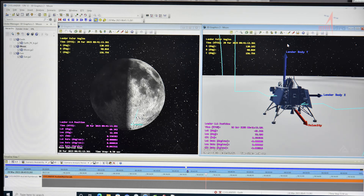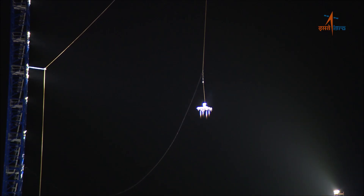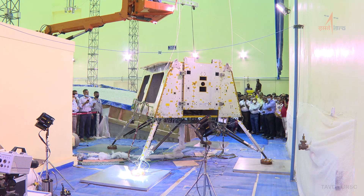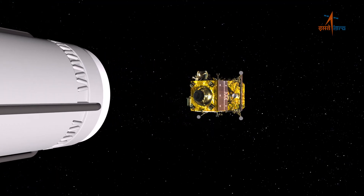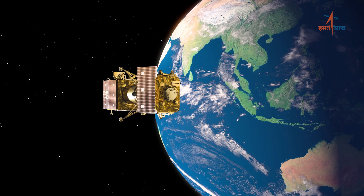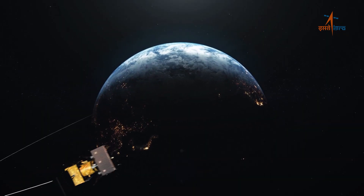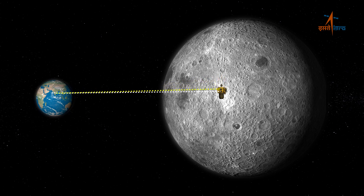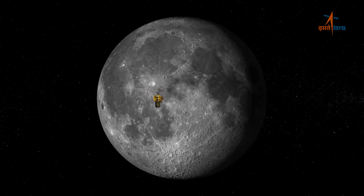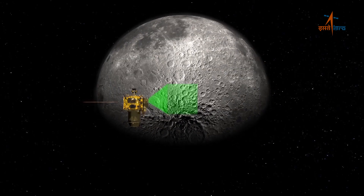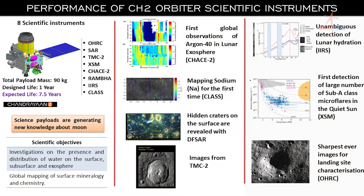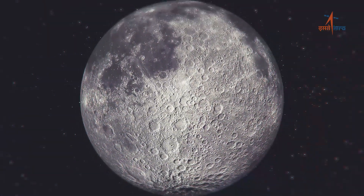Extensive simulations and ground testing have been carried out to evaluate system performance in non-nominal conditions. Optimum mission planning and highly precise performance of all systems of the Chandrayaan-2 orbiter resulted in savings of additional propellant, enhancing the planned mission life of the orbiter from one year to approximately 7.5 years. All eight state-of-the-art payloads of the Chandrayaan-2 orbiter have been providing a plethora of science data to the scientific community, helping in revealing the deep secrets of the Moon.